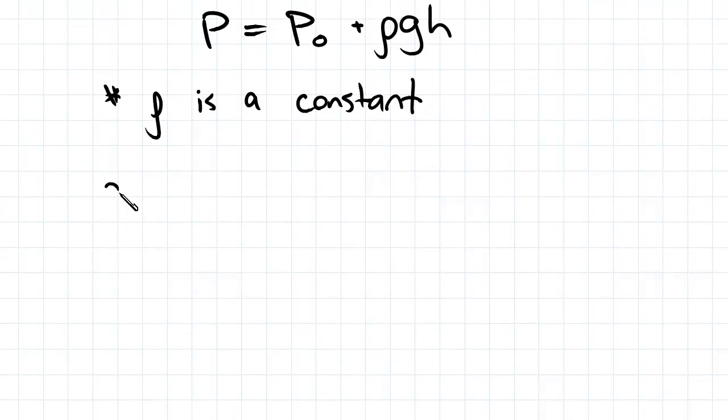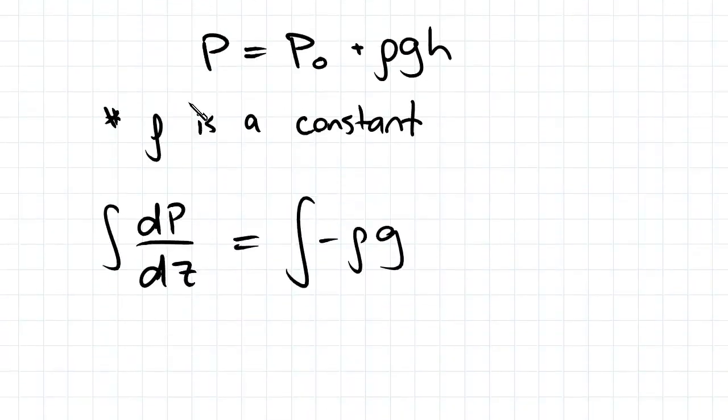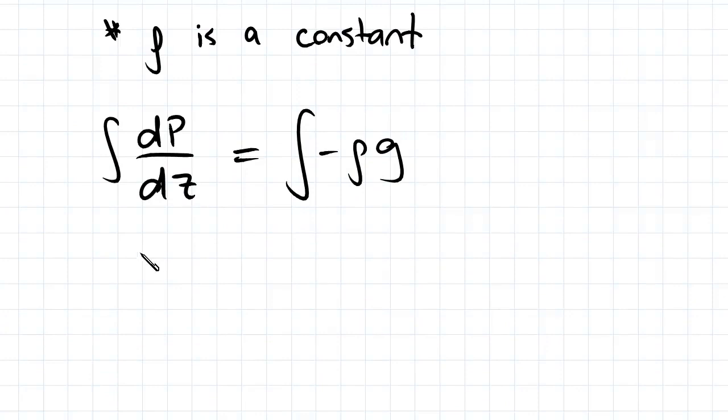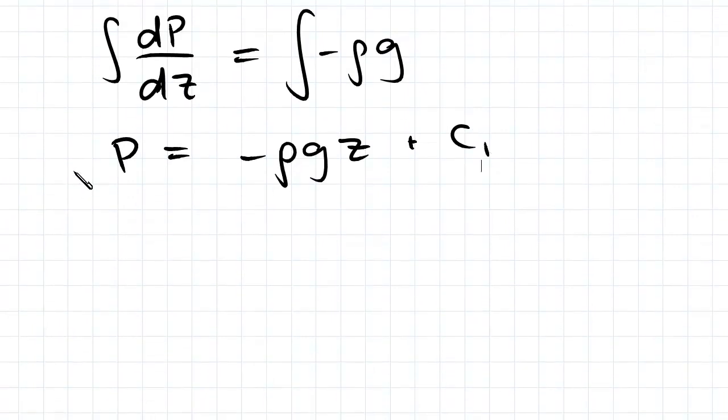So all we have to do is integrate dP over dz and negative rho g. So we integrate both of those. We'll get P equals negative rho g z plus some constant. If we assume that at z equal to zero, P equals some pressure.